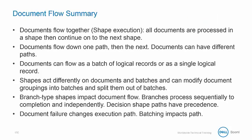Now let's look at a summary of document flow. Remember that documents flow together — all documents are processed in a shape and then continue on to the next shape. Documents flow down one path, then the next, and documents can have different paths. Documents can flow as a batch of logical records or as a single logical record. Shapes act differently on documents and batches and can modify document groupings. Branch type shapes impact document flow — branches process sequentially to completion and independently, and decision shape paths have precedence. Document failure changes execution path, and batching also impacts path.